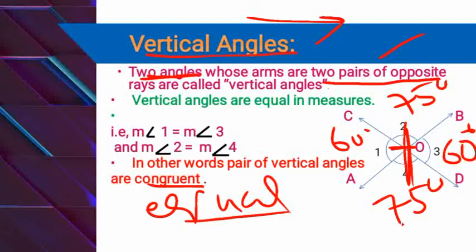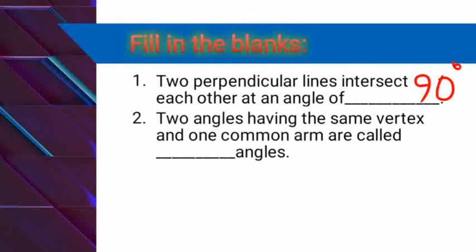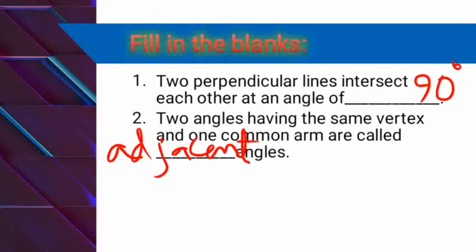Now we are moving to the question and answer session. First question: two perpendicular lines intersect each other at an angle of — the answer is 90 degrees, or you can say a right angle. Second question: two angles having the same vertex and one common arm are called — the answer is adjacent angles.